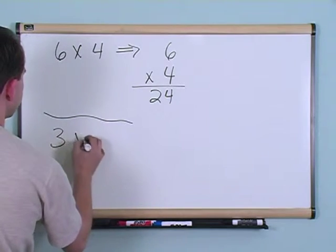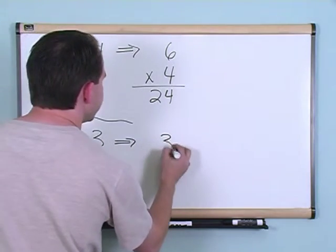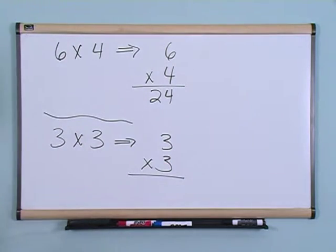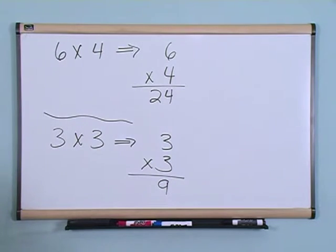What about 3 times 3? I'm going to write that down just like this, and you should remember from your times tables that 3 times 3 is just going to give you 9. 3 times 3 is 9.